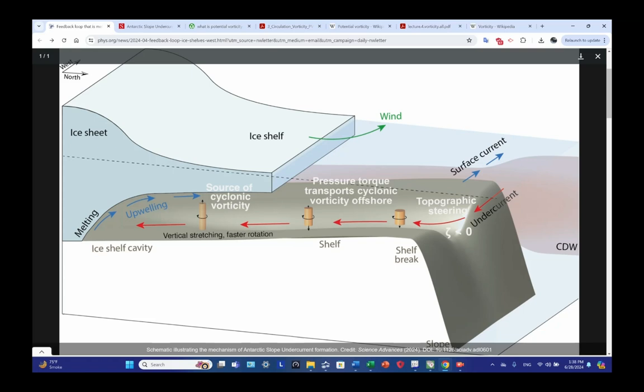And what happens here, here's the shelf break. So you got the shelf, you got the shelf break. Here's the deep water, surface water, deep water. You get surface current pushing this way through conservation of volume. You get an undercurrent that moves in.